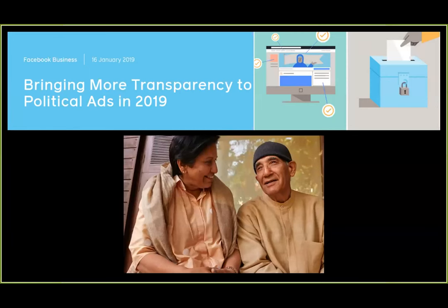In 2018, after the Cambridge Analytica revelations — where an analytics firm used Facebook products to build voter profiles and target users, essentially using Facebook the way it was meant to be used — Facebook had to respond to this public reckoning with their platform. That was the moment in which political advertising transparency was offered as a solution by Facebook. It's important to locate this as a response that emerged as a PR move, as damage control and a marketing move by the largest marketing platform in the world.